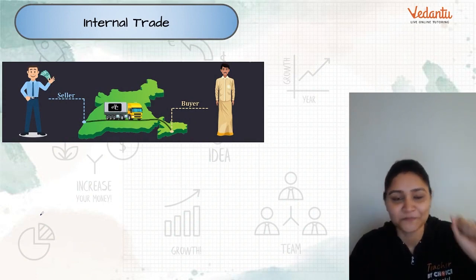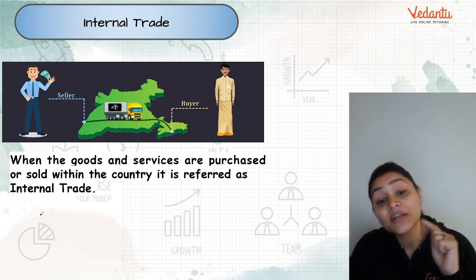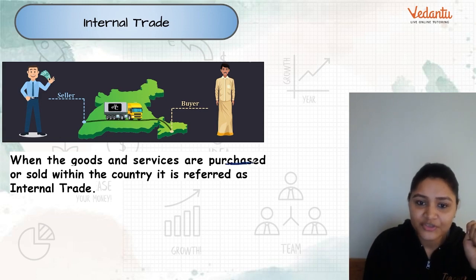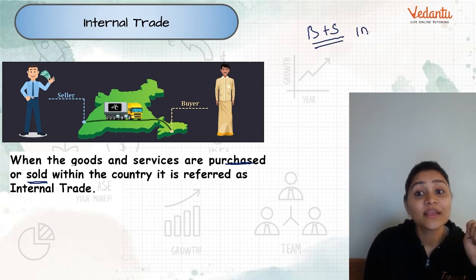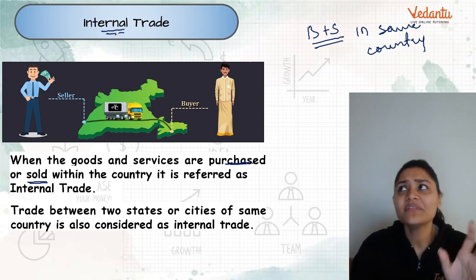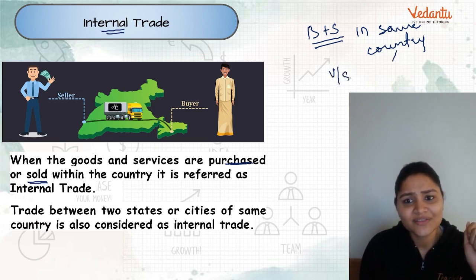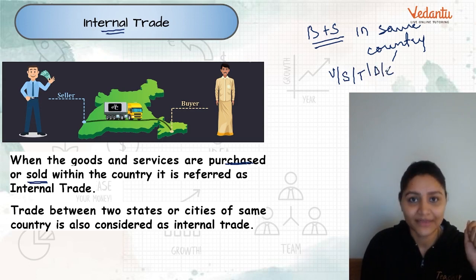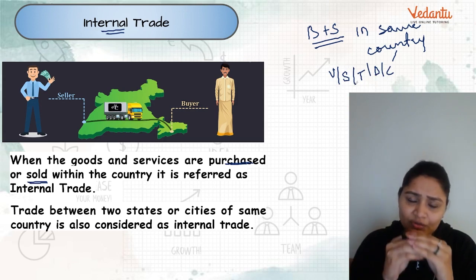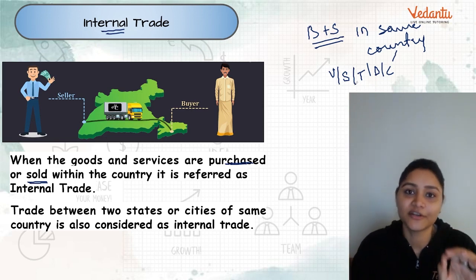Internal trade: when goods and services are purchased or sold within the same country, this buying and selling happening within the same country is called internal trade — within the boundaries of the same country. When we say within the boundaries of the same country, it includes villages, states, towns, districts, and cities. Any trade between two cities, two states, or two villages where goods are sold and purchased is also a part of internal trade.